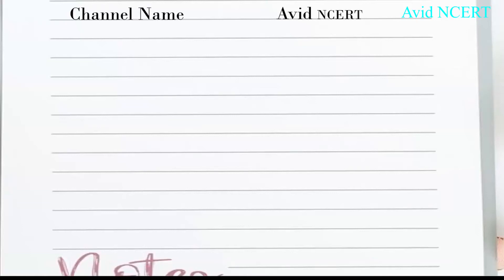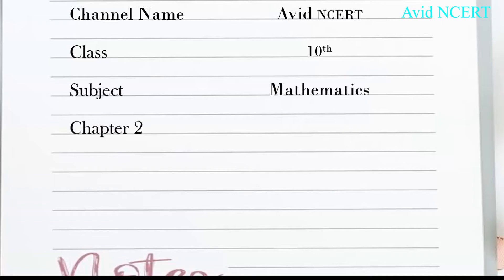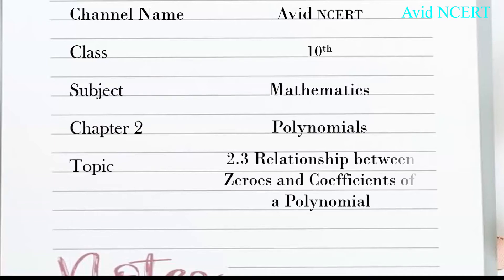Hello viewers, welcome to my channel, this is Geeta. This session is for Class 10 Mathematics, Chapter 2, Polynomials. And the topic we are discussing is 2.3, relation between zeros and coefficients of a polynomial.